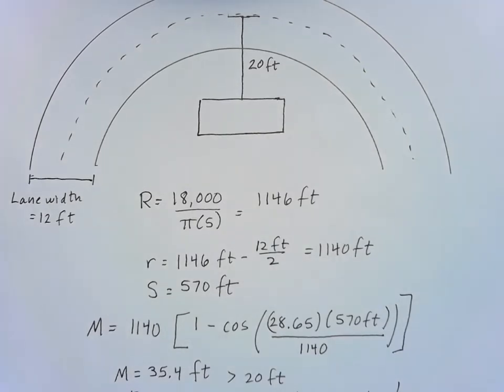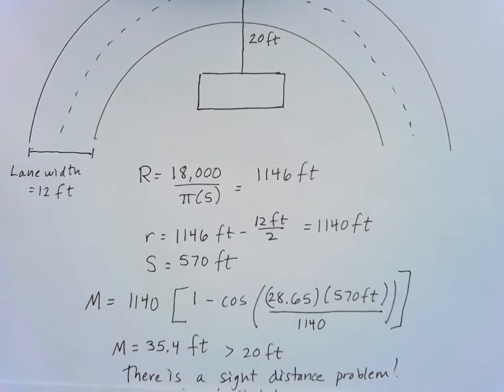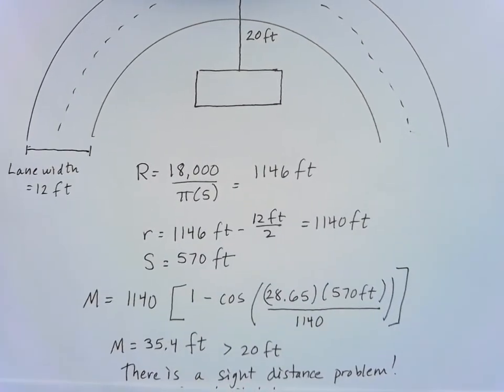35.4 is greater than that 20 feet that was given in the problem. So there is a site distance problem. 35.4 is greater than the 20 feet that's given, so there's a site distance problem. The question is, what could be changed?